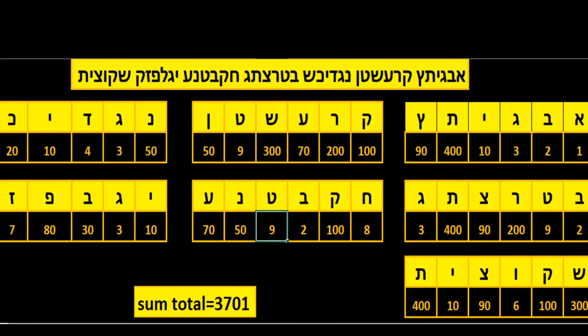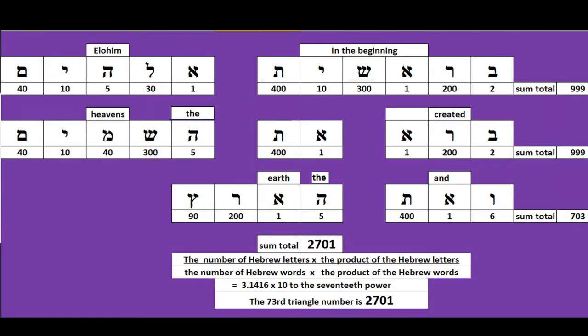The 42 letter name of God derived from the Genesis prayer, 3701, star and triangle number 73. 3701 multiplied by 0.73 equals 2701, the value for Genesis 1 verse 1, 0.73, star and triangle number 73.